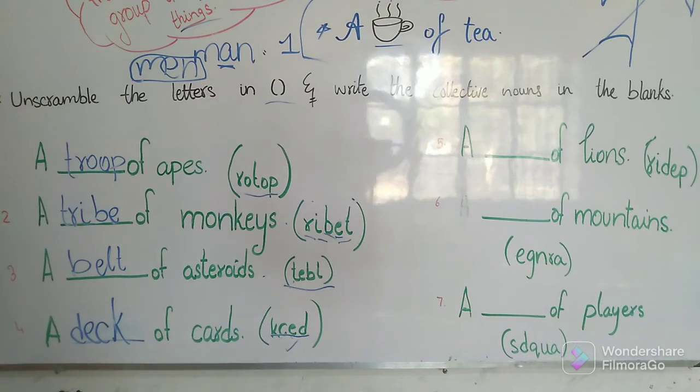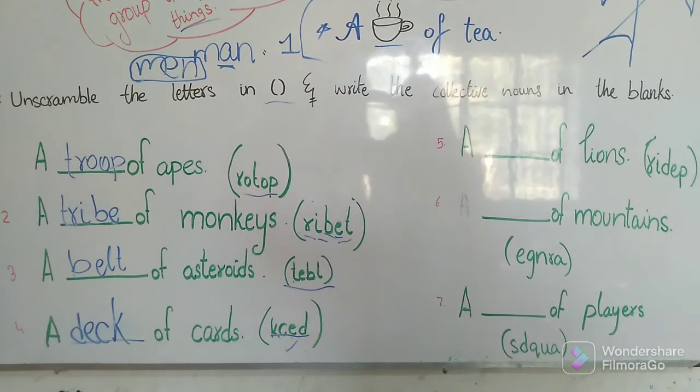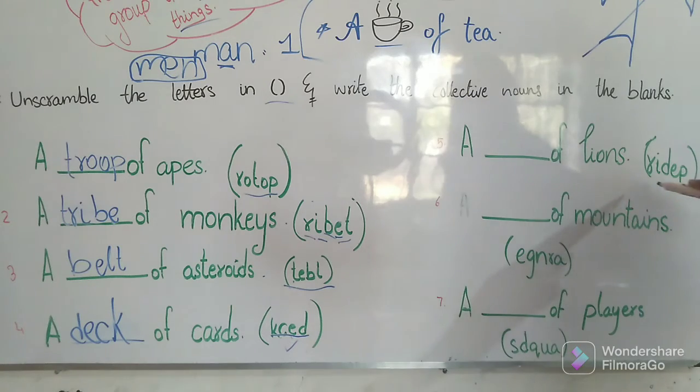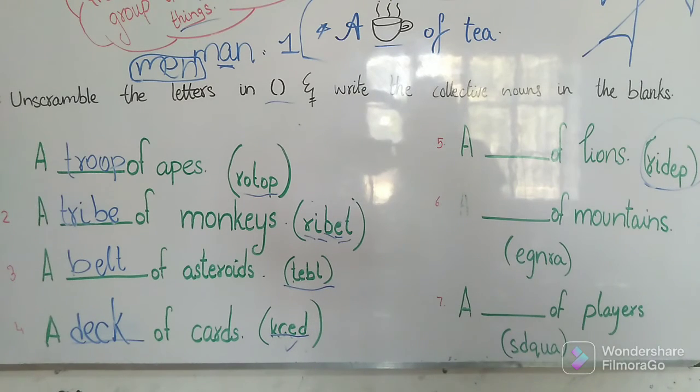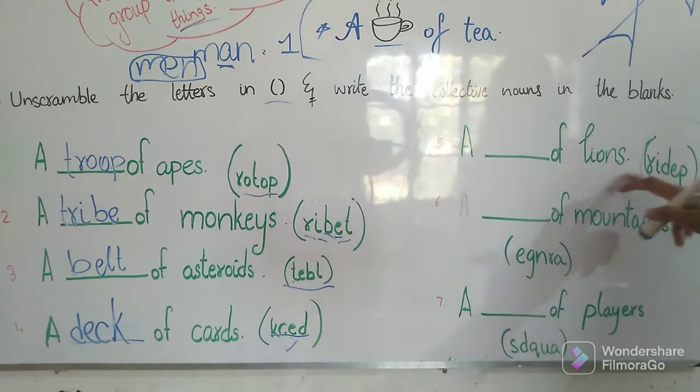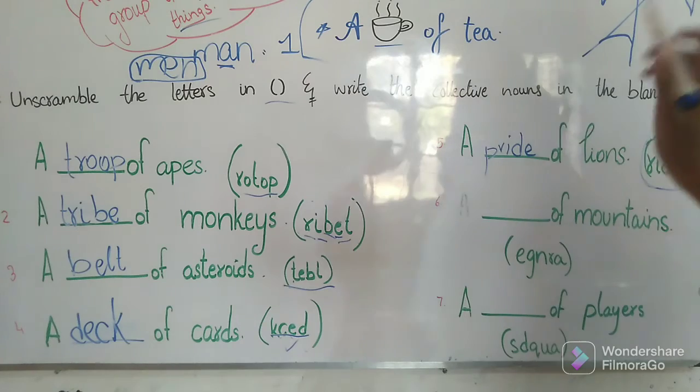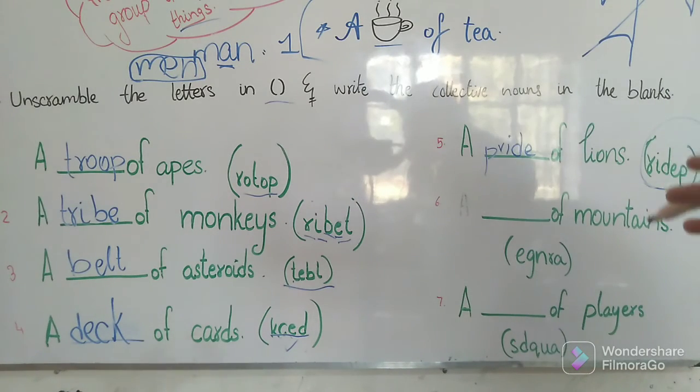Our fifth sentence is a blank of lions. R-I-D-E-P. This word is given in the bracket. What does it make now? A blank of lions, what do you think about it? A square of lions, a number of lions? No, we are going to use this word R-I-D-E-P. Ride up? No. P-R-I-D-E, a pride of lions. So it suits, it suits as well with the situation and with the sentence. A pride of lions.